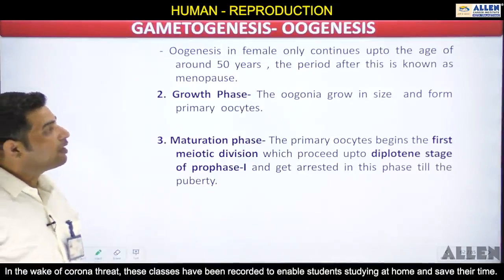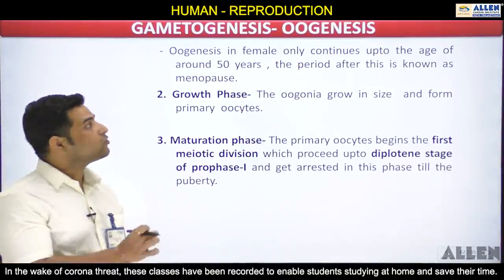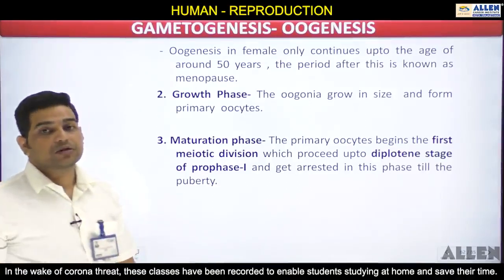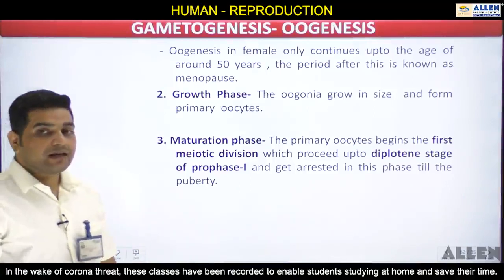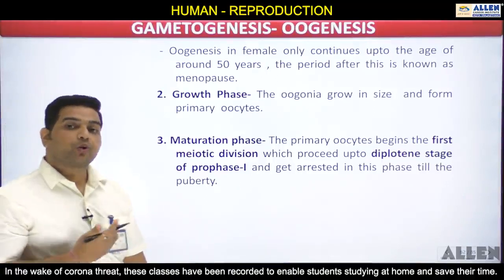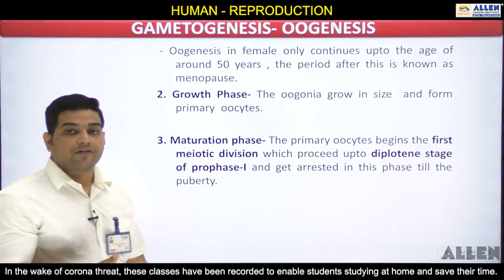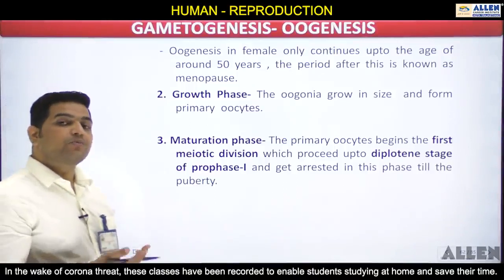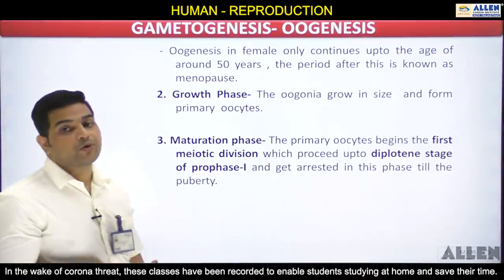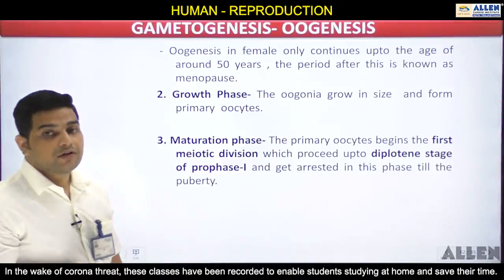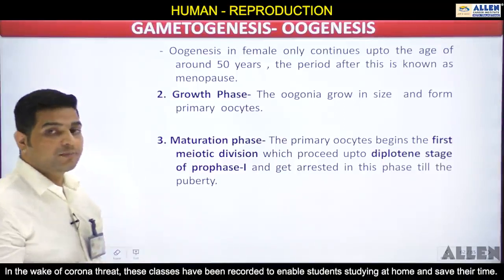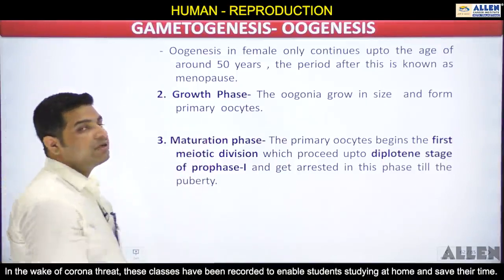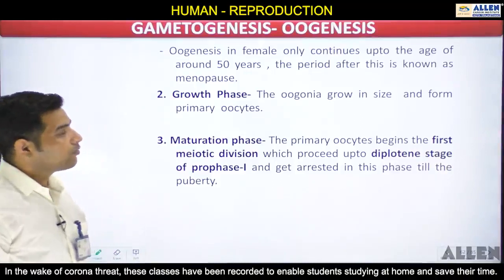Oogenesis in the female only continues up to the age of 50 years; the period after this is known as menopause. This means the female cannot produce gametes throughout its entire life like the male. The male can produce sperm throughout its entire life, but the female cannot. When it is no longer producing gametes, it is out of the reproductive phase — this is known as menopause.